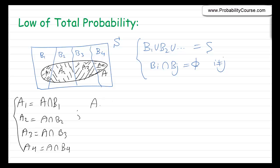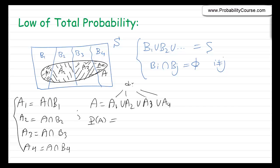A is equal to A1 union A2 union A3 union A4. Again, the number four is just arbitrary here — you could choose any different partition, any number of sets, B1 up to B10 or anything. Then, probability of A is equal to the probability of this union. But because these are disjoint sets, by the third axiom of probability, we can write probability of A equal to probability of A1 plus probability of A2 plus probability of A3 plus probability of A4. And that is basically the law of total probability.